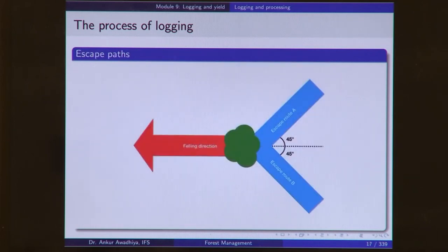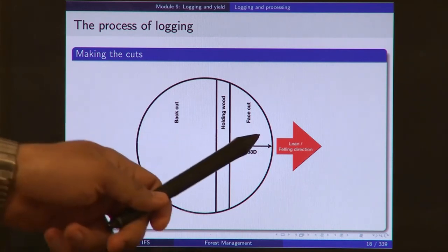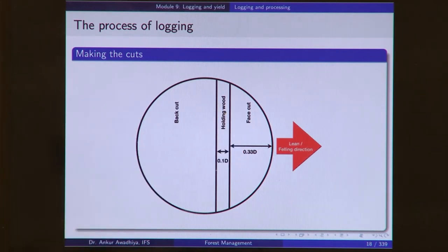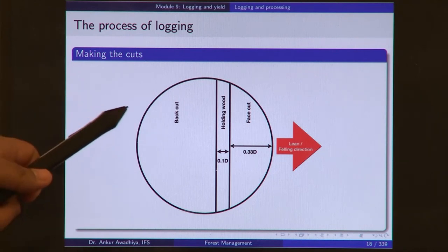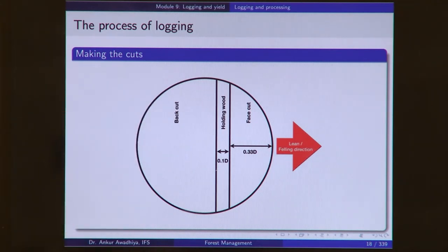We decide on escape paths, which are typically 45 degrees to the back of the felling. We decide on two escape paths for every tree. In the process of logging we make cuts: there is the face cut on the front, comprising the top cut and the bottom cut, followed by a back cut. The portion remaining in between is known as the holding wood, which also acts as a hinge.